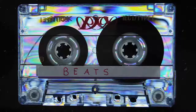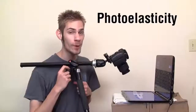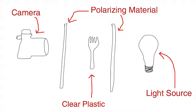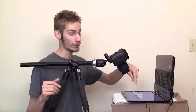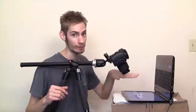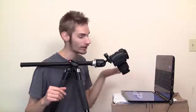To make this photoelasticity picture, you need two polarizing filters — one behind and one in front of the plastic object. The one behind the plastic object needs to be linear. Most computer monitors are already linearly polarized.